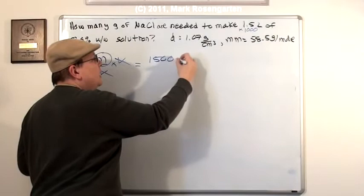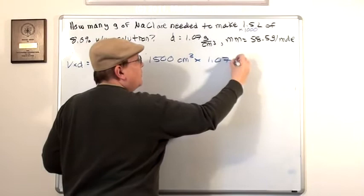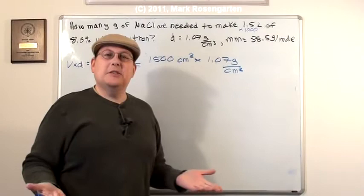Again, a milliliter and a cubic centimeter represent the same amount of volume. And we're going to multiply that by the density, which is 1.07 grams per cubic centimeter. Now, the way it works is simply this. Water has a mass, on average, of about one gram per cubic centimeter. But if you add salt to that, you're going to increase its density. So you really need to know the density of the solution in order to make this work.